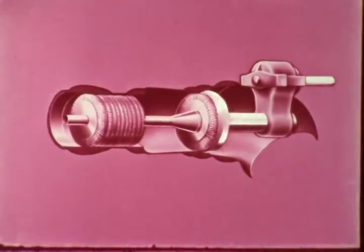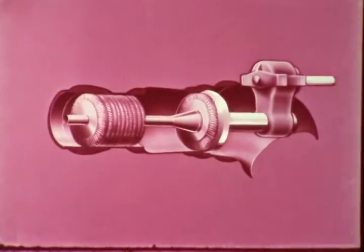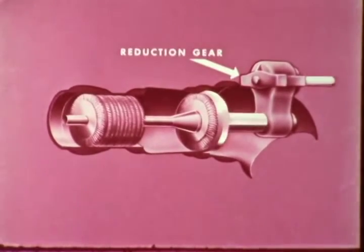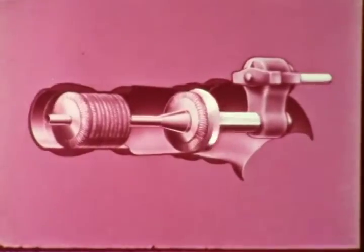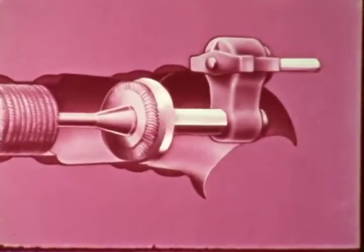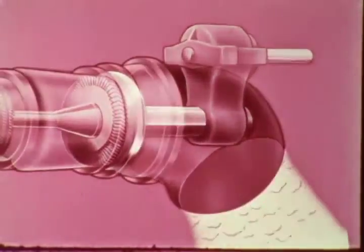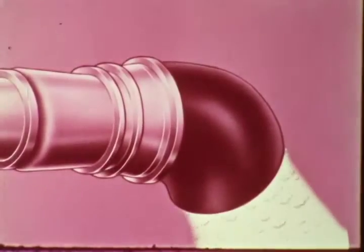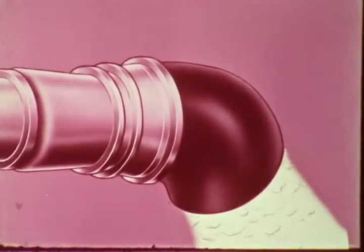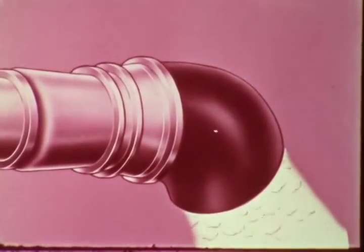In a turboshaft engine, the power turbine drives the helicopter rotor through reduction gearing and the aircraft transmission. Normally, no use is made of the small amount of energy remaining in the exhaust gases.